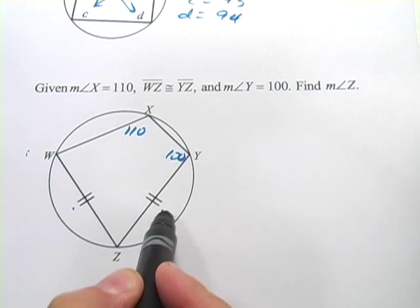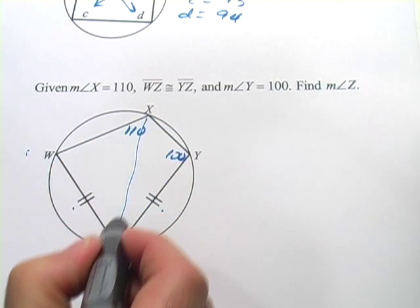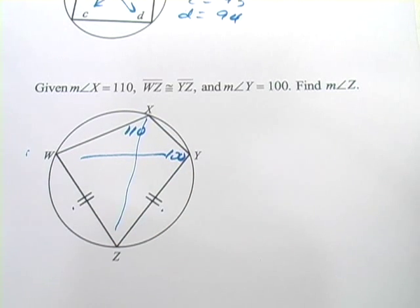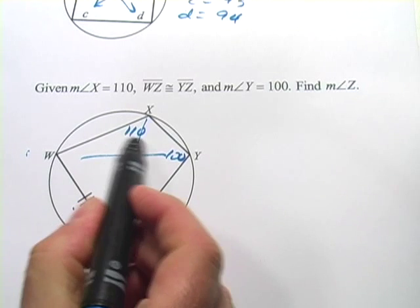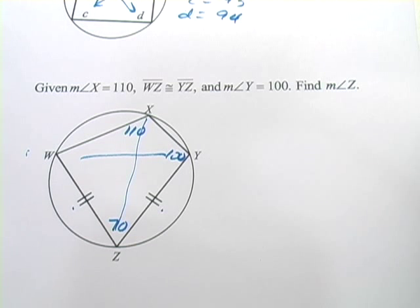We don't really need to know that these are congruent because what we know is that opposite angles in an inscribed quadrilateral are supplementary. If we want to find angle Z, we simply subtract 110 from 180 and we get 70. That's a little bit of work with inscribed quadrilaterals.